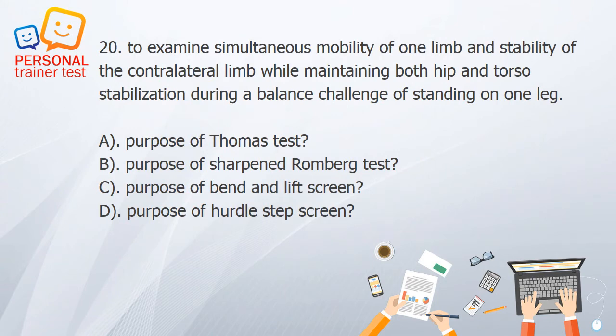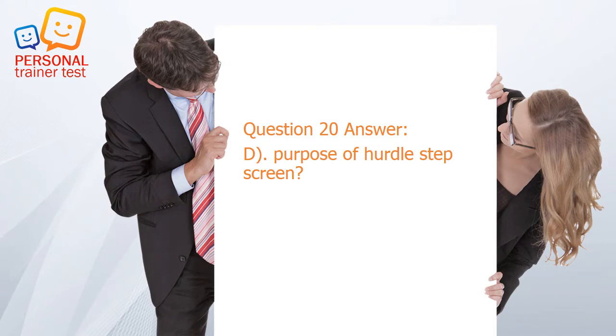Question 20. A. Purpose of Thomas test. B. Purpose of Sharpened Romberg test. C. Purpose of bend and lift screen. D. Purpose of hurdle step screen. Answer: D. To examine simultaneous mobility of one limb and stability of the contralateral limb while maintaining both hip and torso stabilization during a balance challenge of standing on one leg — purpose of hurdle step screen.